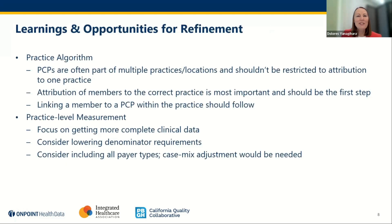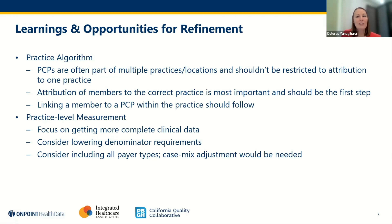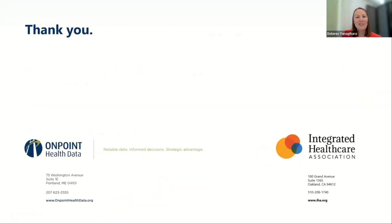So what did we learn? Jesse already covered some of the refinement opportunities related to the practice algorithm, so I'm going to focus on learnings and opportunities related to the practice level measurement. For CAPSI, we will be focused on getting more complete clinical data for more accurate results — in particular blood pressure, childhood immunizations, and lab results. It was clear that missing clinical data affected the results. We'll consider lowering denominator requirements to balance reliability of results with the number of practices with usable results, especially for the pediatric measures. And we'll also consider including all payer types, not just commercial, to increase practice size. This would then require some type of case mix adjustment, so more methodological work would be needed, but getting results for their full panel is preferable for practices. That's what we have for you in terms of content. Now we'd be happy to answer any questions.